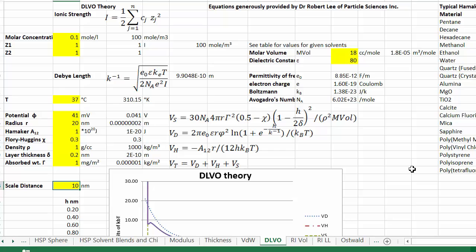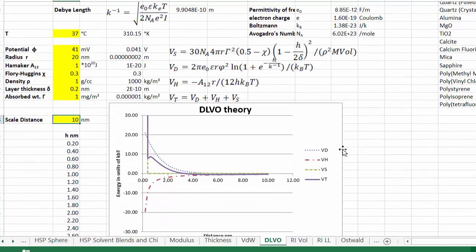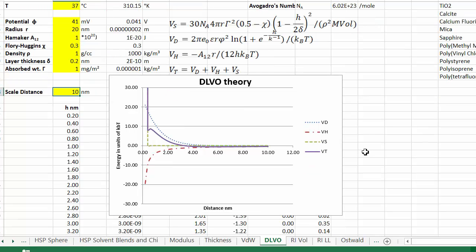I'm just going to show you very briefly a more complicated workbook on DLVO theory. All the formulae for DLVO are contained here. And as with all these workbooks, the inputs are in yellow. So you just have to change the inputs to see what happens to the DLVO output.